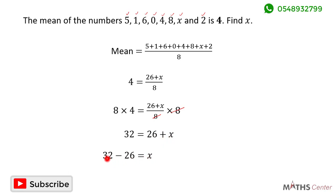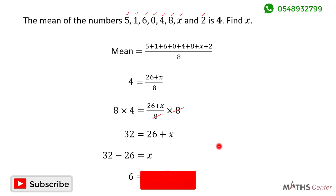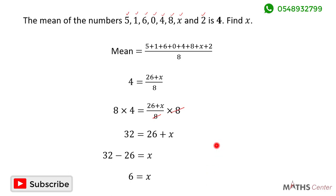So x equals 32 minus 26, which is 6. The value of x in this set is 6. We have learned how to find the mean of a set of numbers in this video. In the next video we are going to learn how to find the mean from an ungrouped frequency distribution table. Bye-bye.